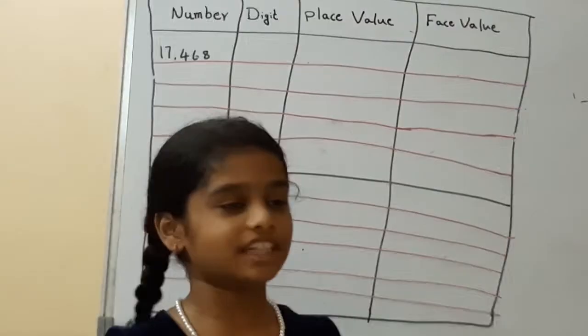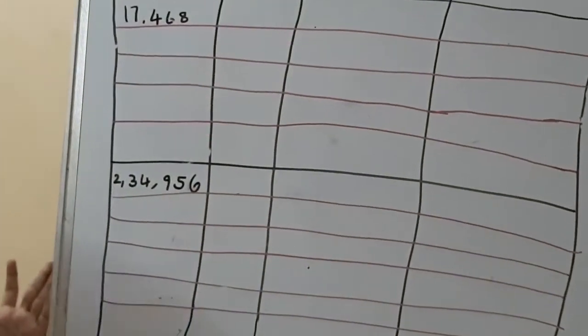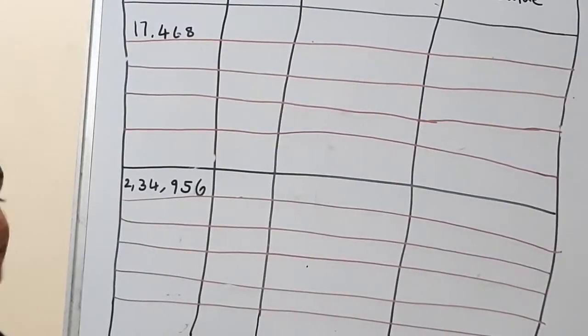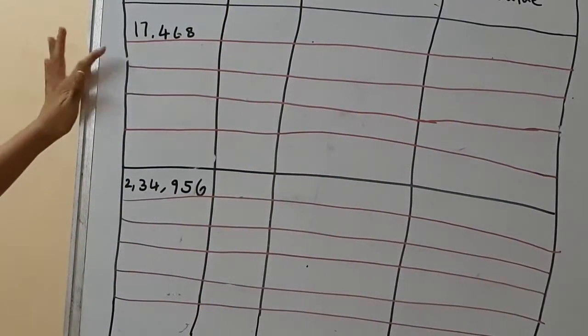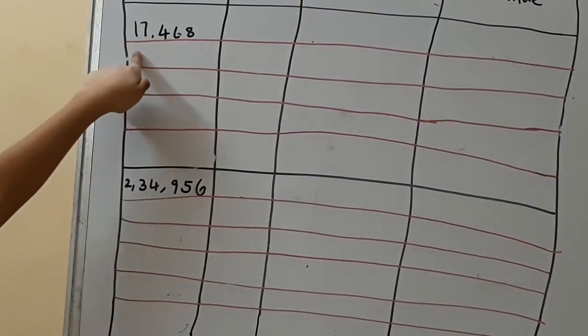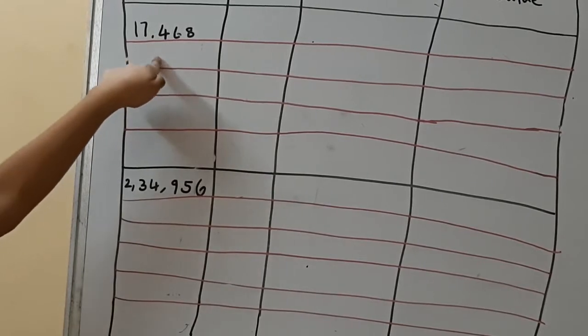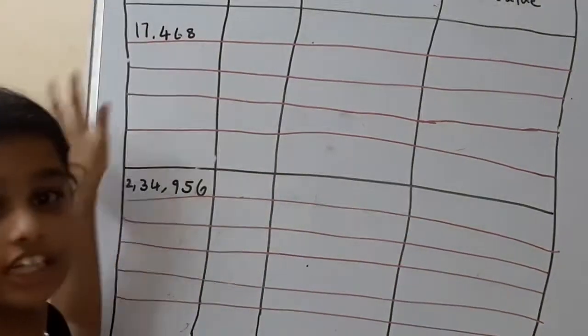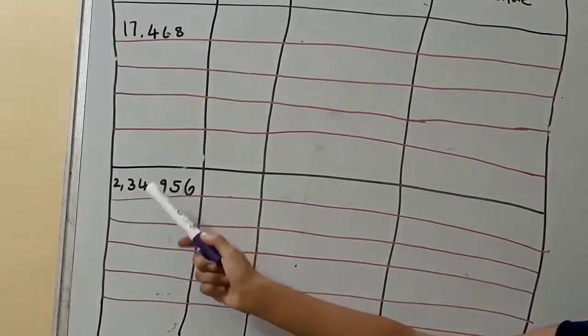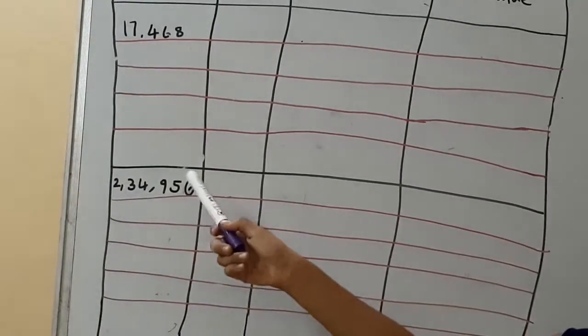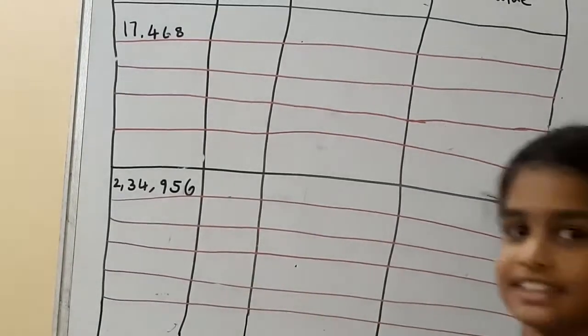I am studying 4th class. Today I am explaining place value in 5th. So we have 17,468 and 234,956. Now let's start.